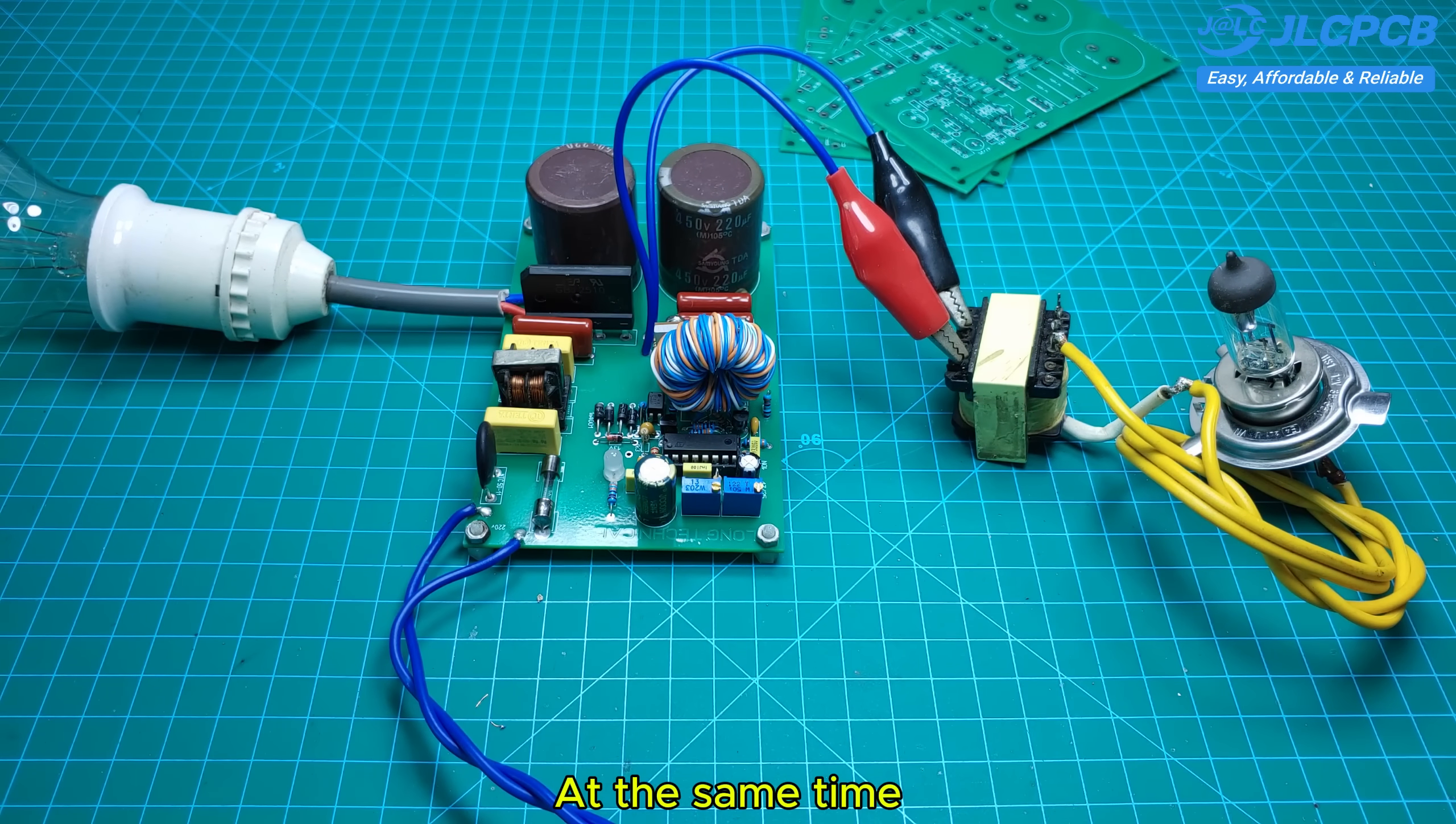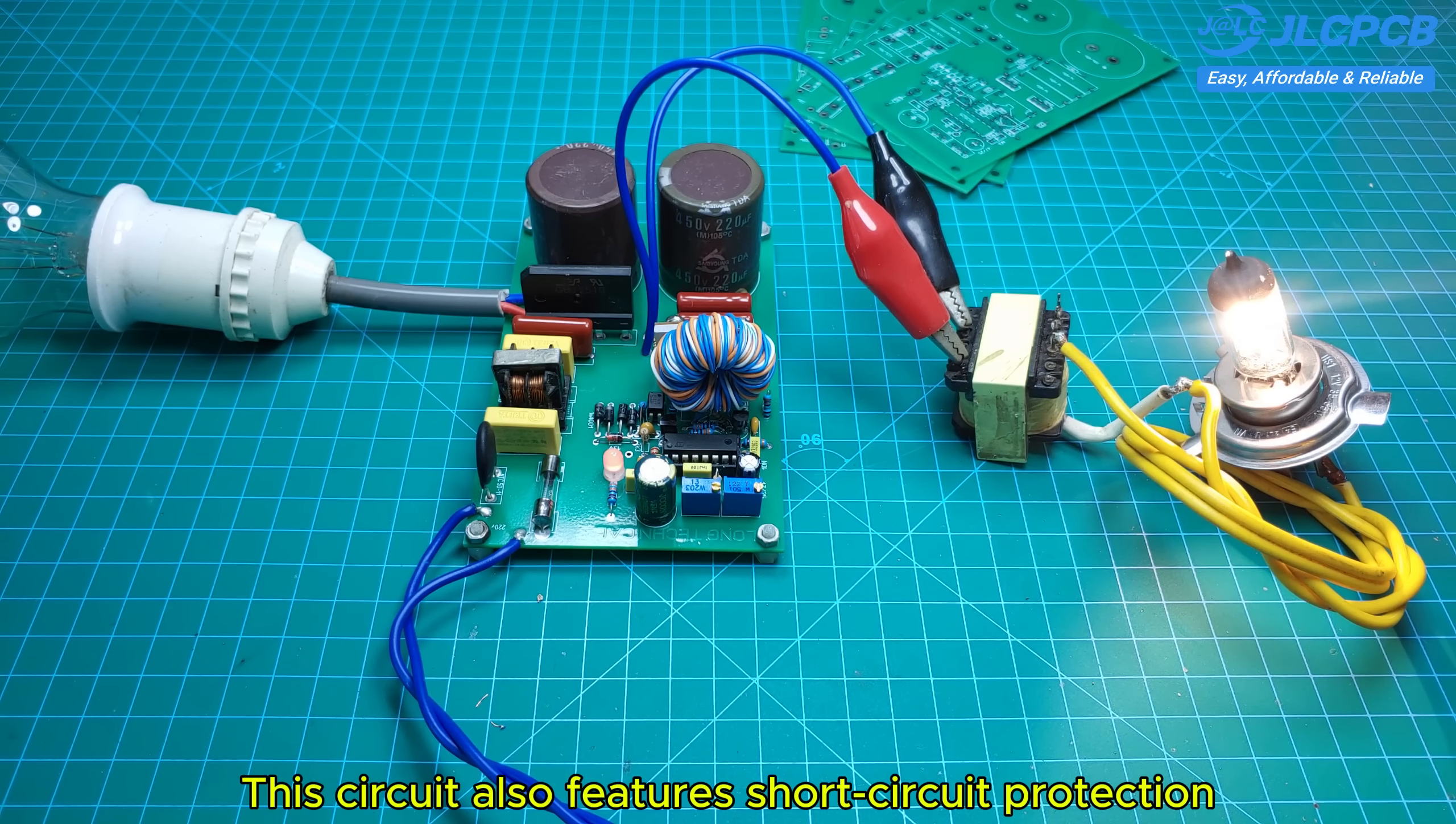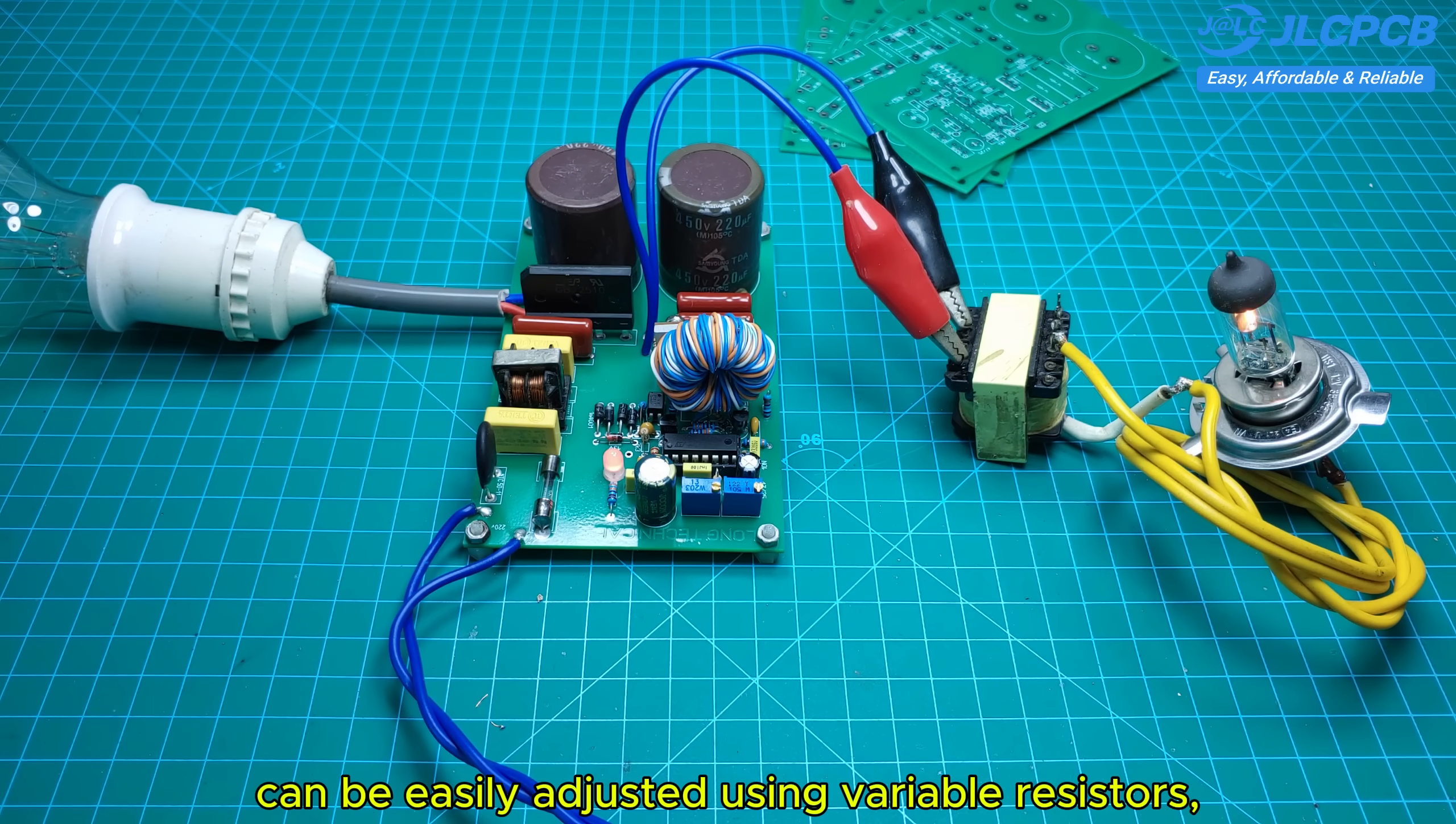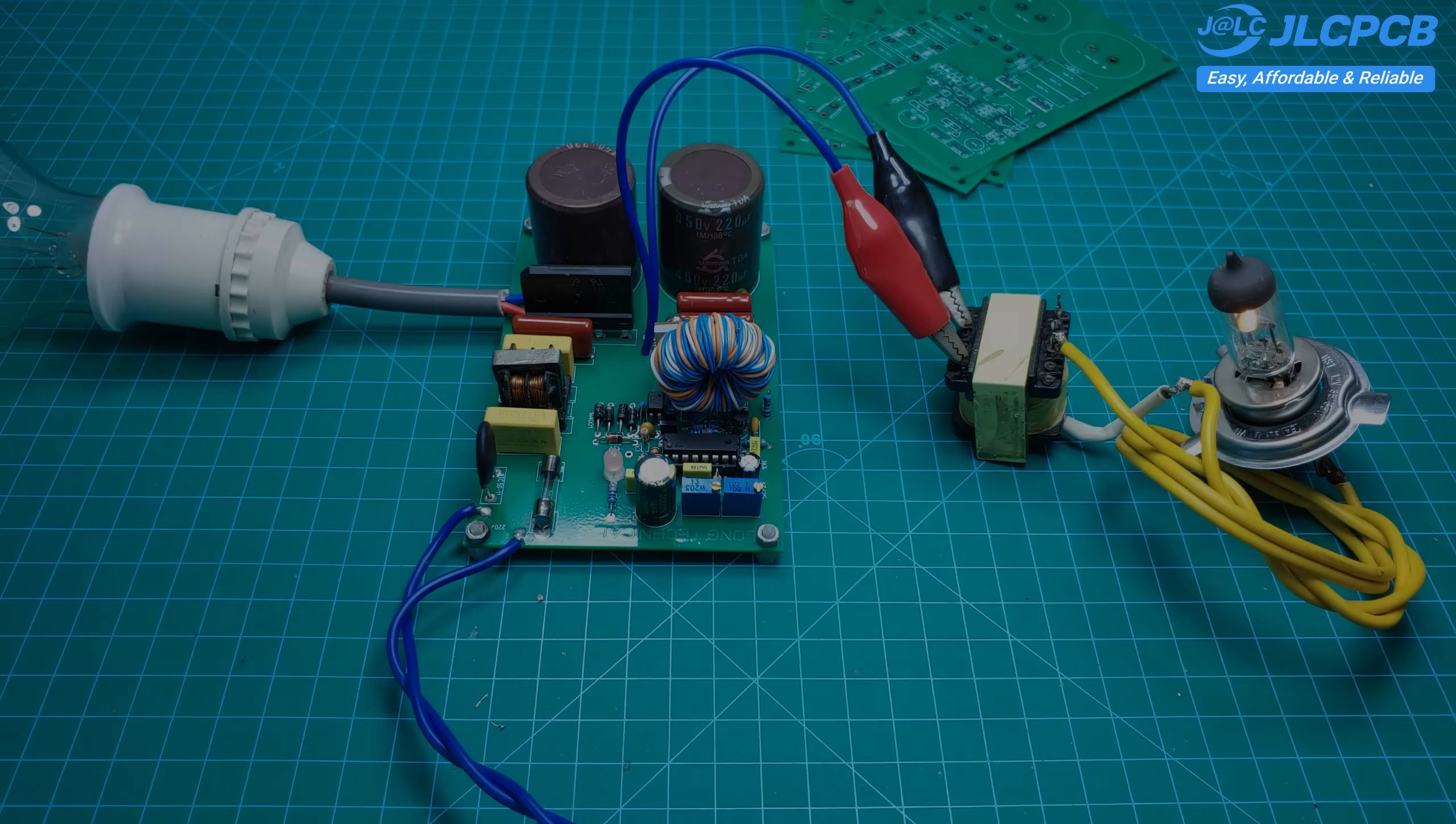At the same time, it can act as a small power supply to power light loads during testing. This circuit also features short-circuit protection and overload protection. The operating frequency and dead time can be easily adjusted using variable resistors, making it compatible with many different types of SMPS transformers.